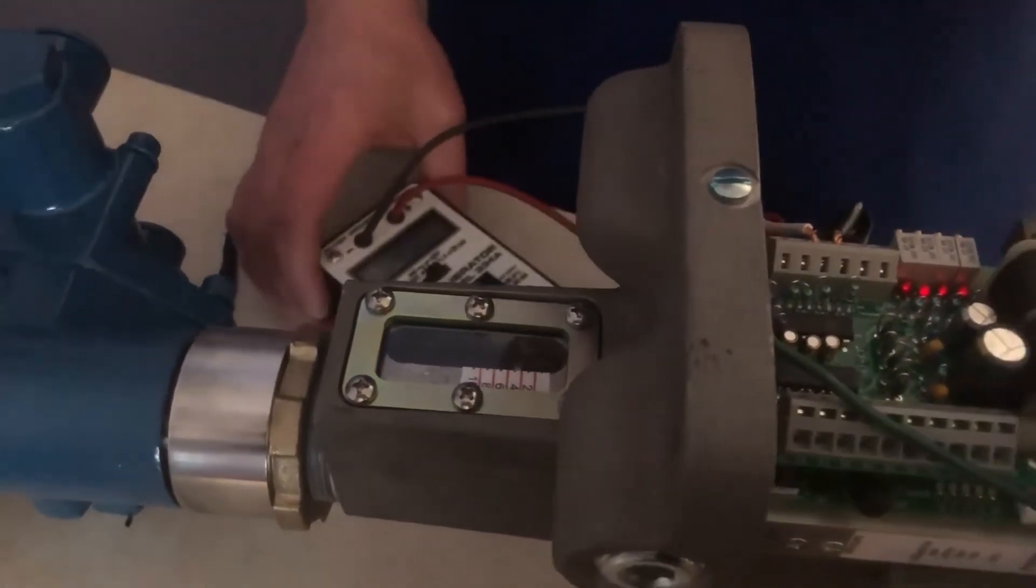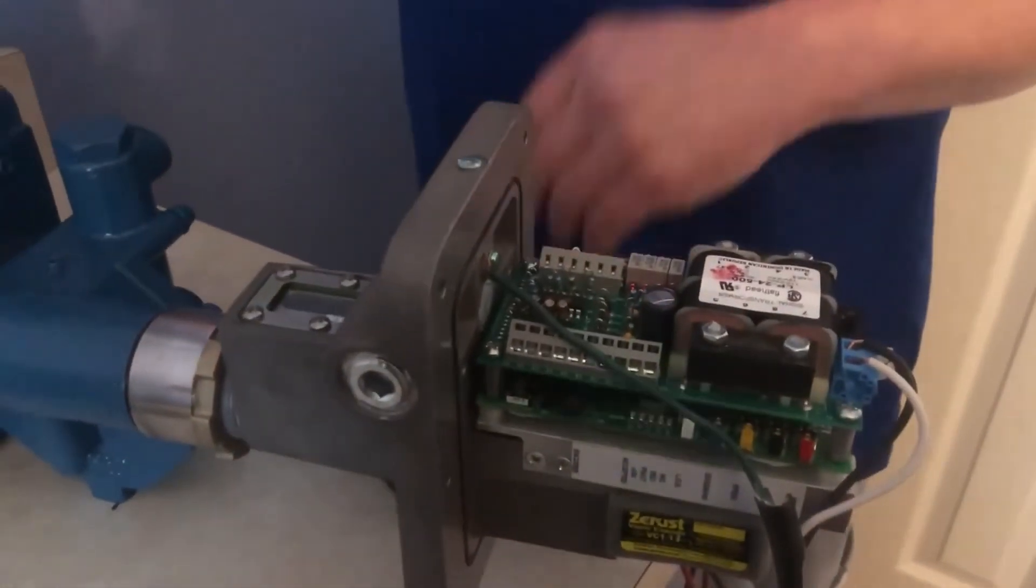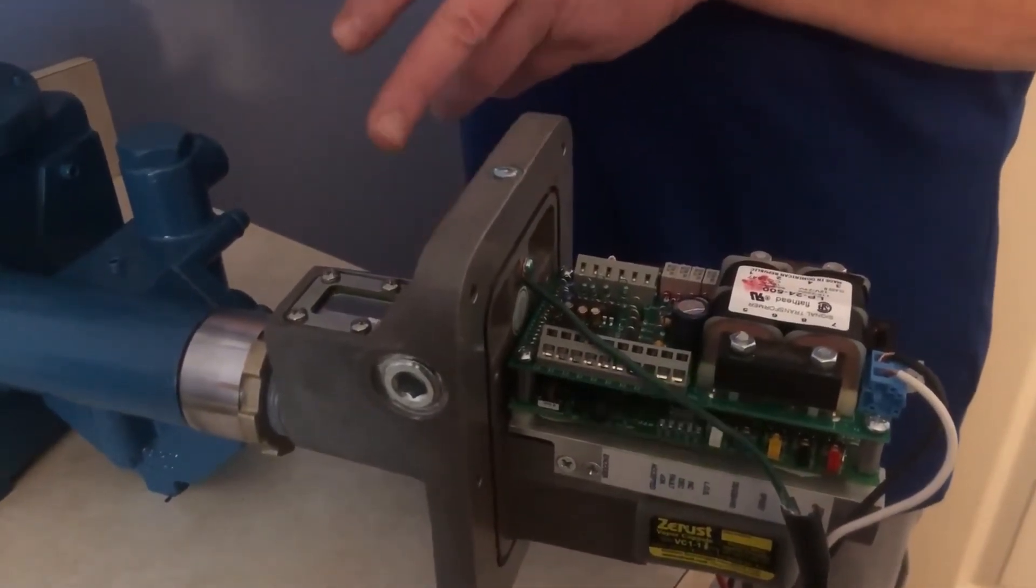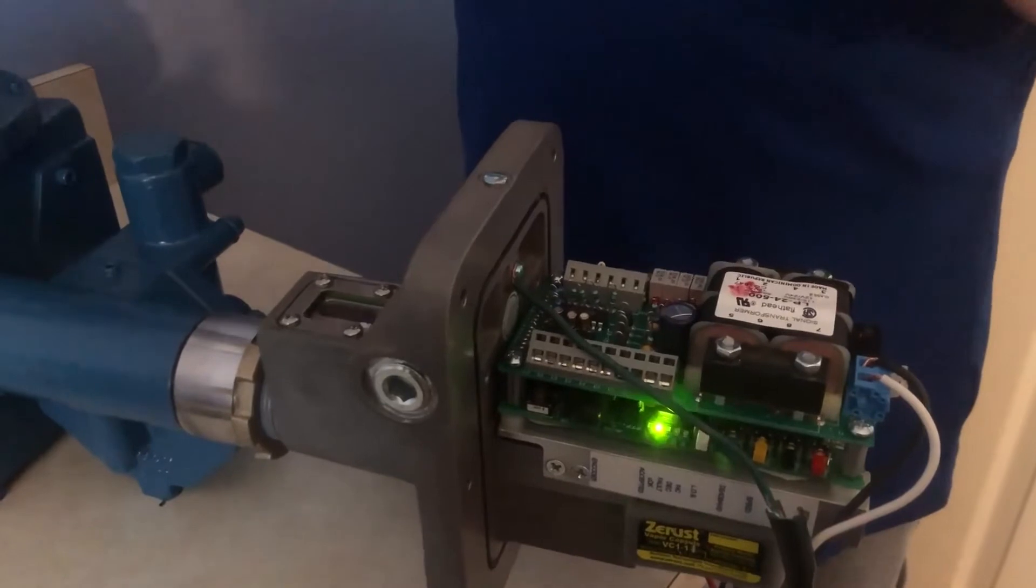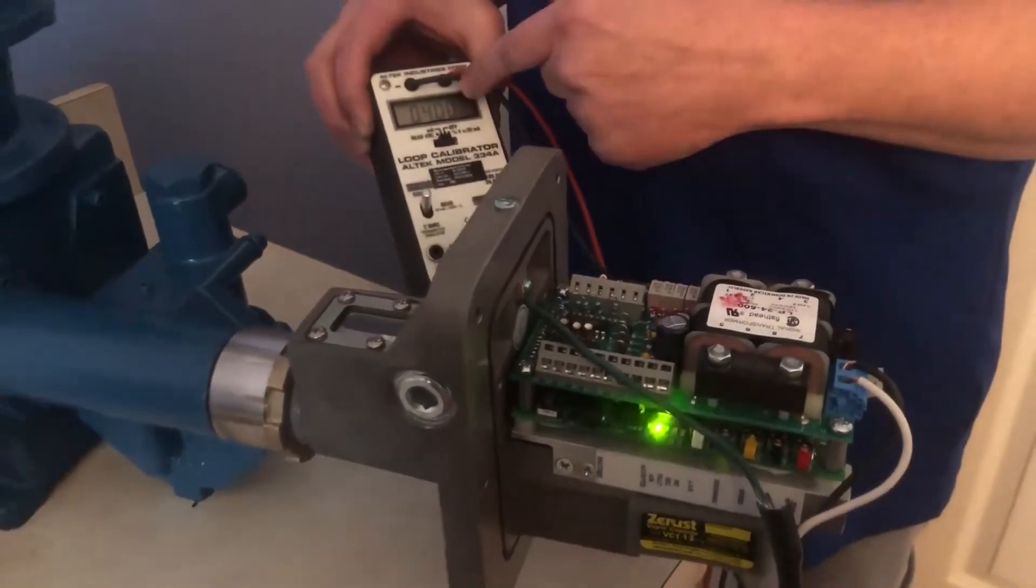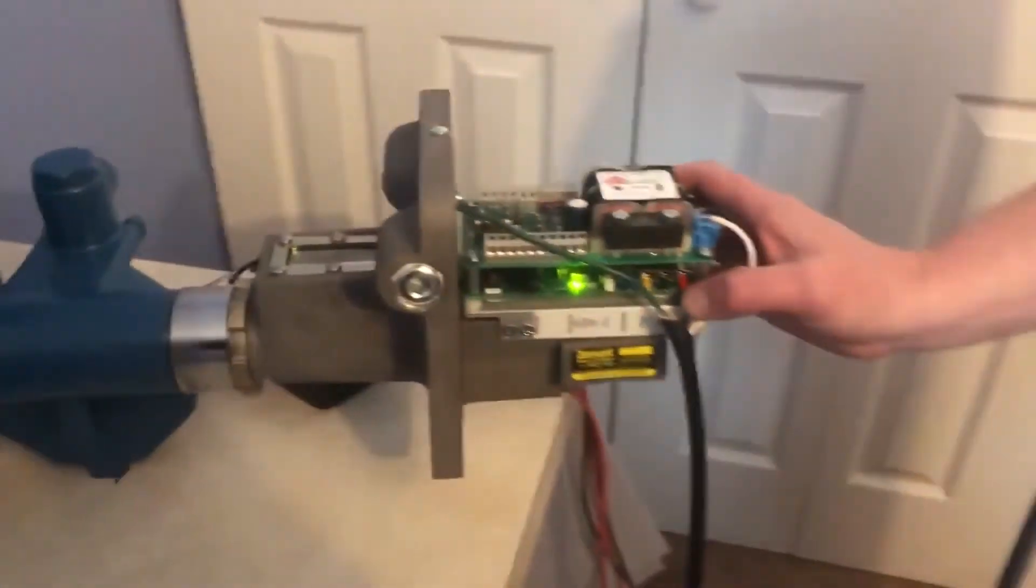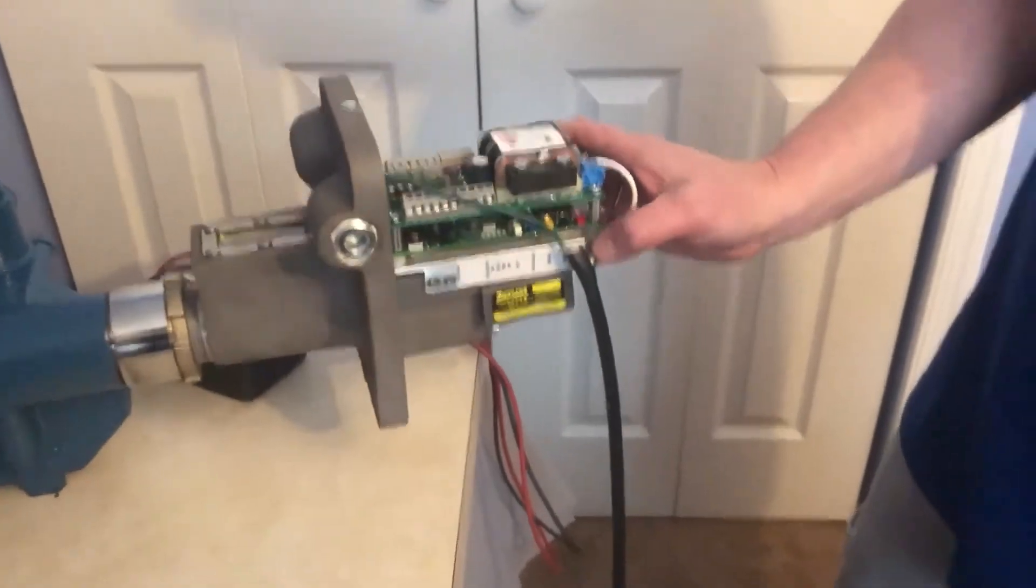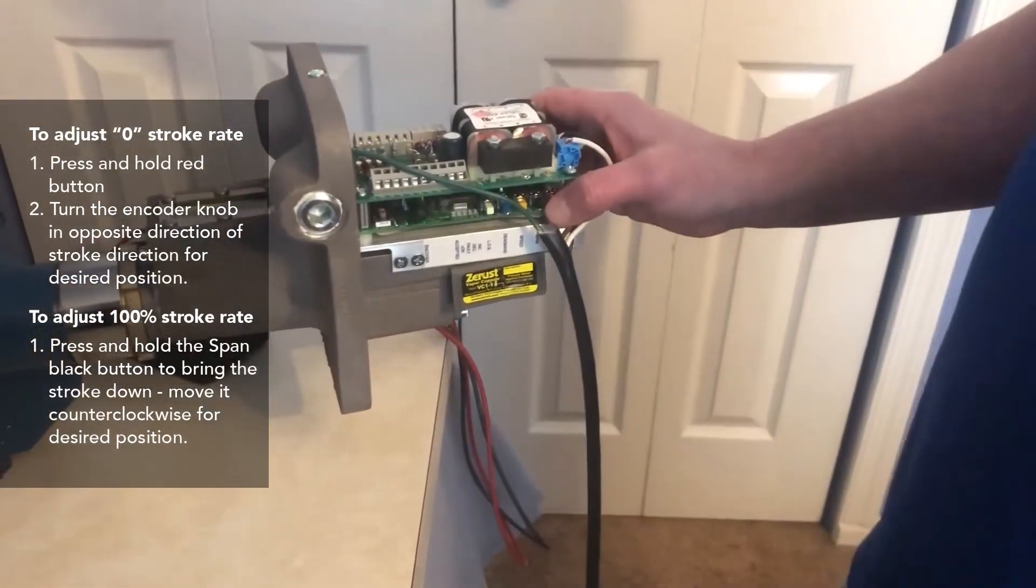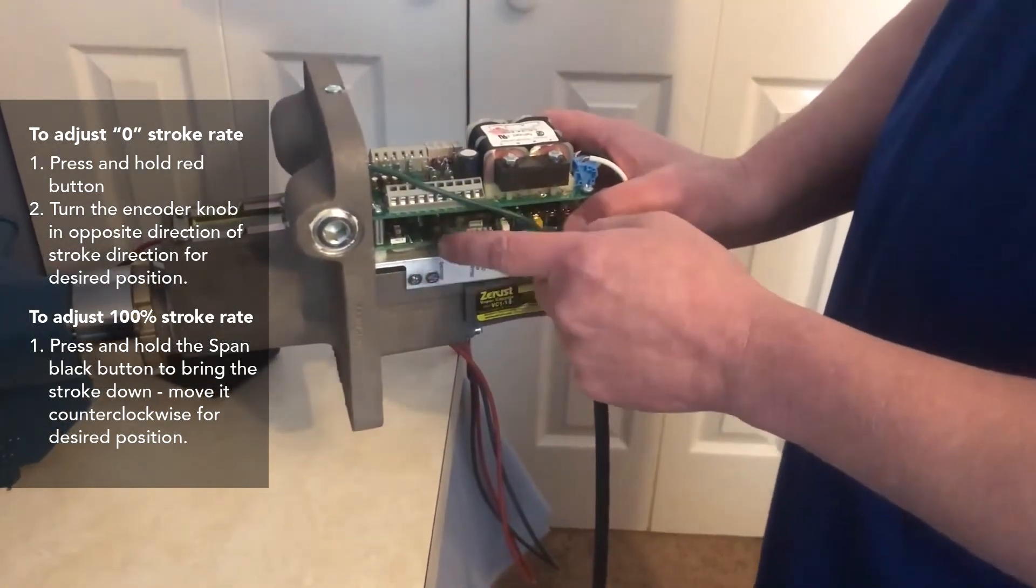Now, what we'll do is you can adjust these points. So what we're going to do is change the four milliamp zero point on the pump to another stroke setting. While four milliamps is on and into the controller, we'll come over here. You see the red button where it tells you it's zero. Press and hold. And as you turn this encoder knob, you want to go whichever way you want to go, you want to go the opposite way on the knob. So if I want to move the stroke forward, we want to turn the encoder knob clockwise.